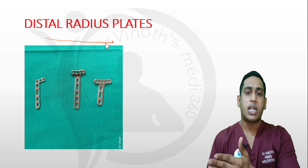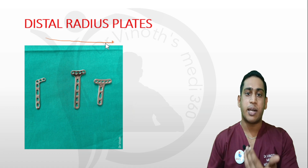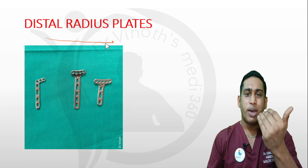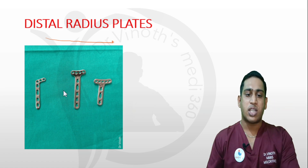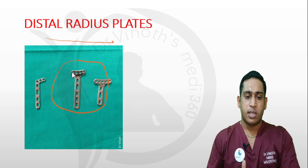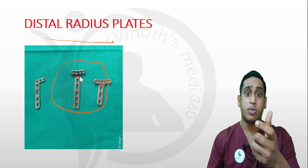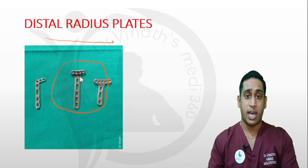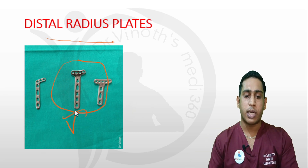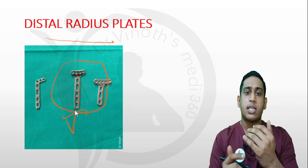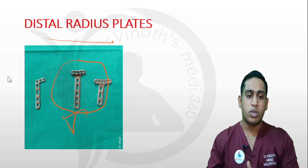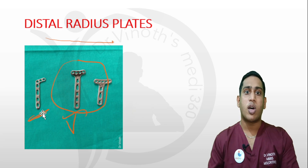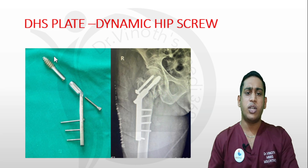For distal radius fractures — including Colles' fracture, Barton's fracture, and Smith's fracture — multiple types of distal radius plates are available based on fracture type and level. They come in anatomical types to match different angles. Generally these plates are applied on the volar aspect, though sometimes dorsal fixation is needed, and dorsal plates are available for that purpose.